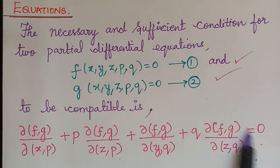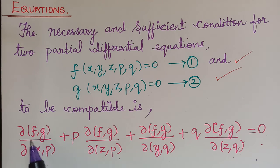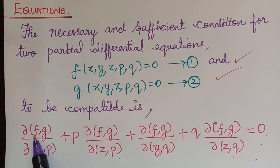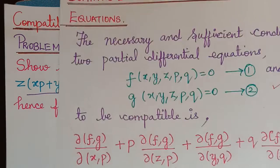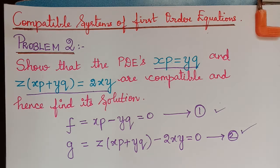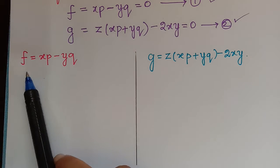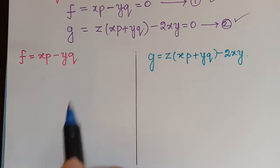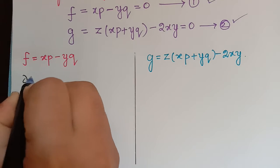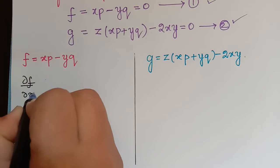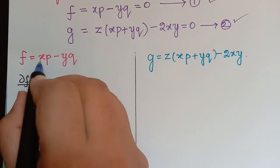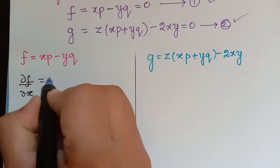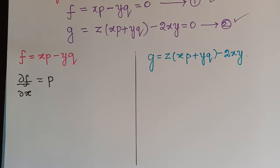To prove this, we shall find the partial differentiation of f and g with respect to x, p, z, and q. I have written f and g here. First, ∂f/∂x: differentiating partially with respect to x, the term xp gives p and the yq term becomes 0, so ∂f/∂x = p.